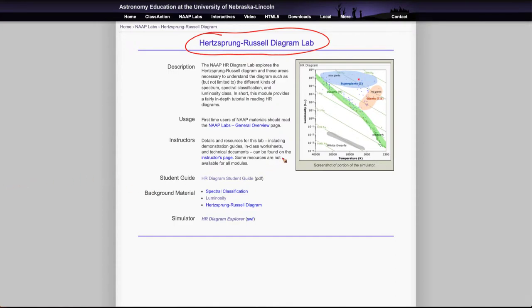The Hertzsprung-Russell diagram itself is a plot of a star's temperature versus its luminosity, and we find that there are patterns that occur including things like the main sequence, giant stars, supergiant stars, and white dwarf stars.